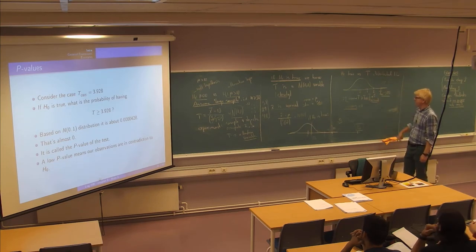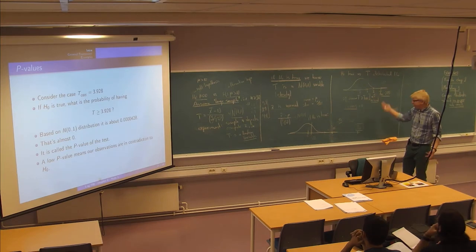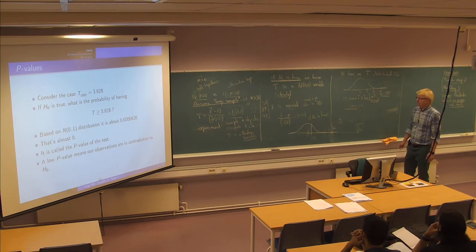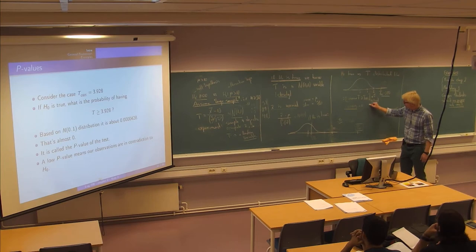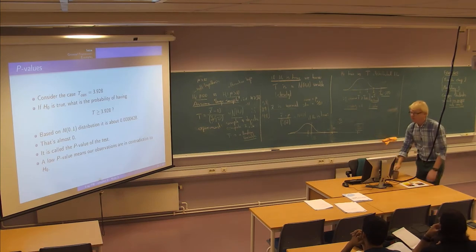The probability of observing something as far out as we did for t is basically zero given that h-zero is true. If I'm observing something with almost a probability of zero based on some assumption, I start to doubt my assumptions. This is exactly what we call a p-value for this test — a very central concept we will discuss every week from now on.